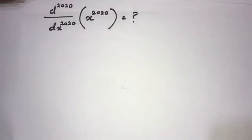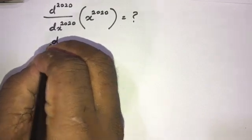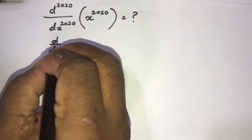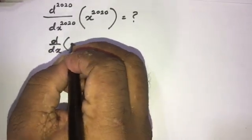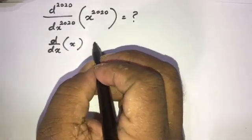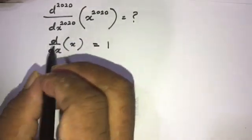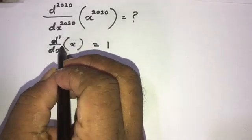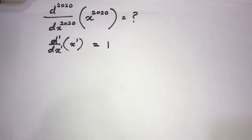First, take the derivative of x. We can write d/dx of x is equal to 1, so we know there is a 1 here.